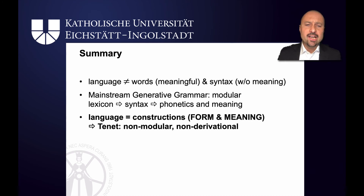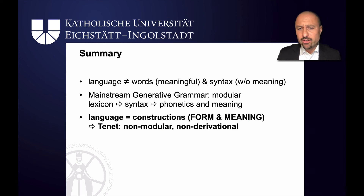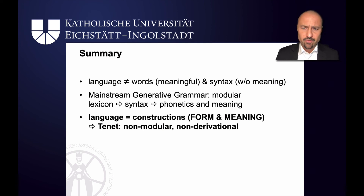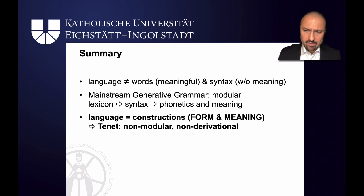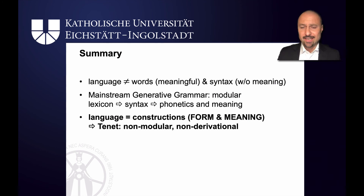Construction grammar is strictly non-modular: for construction grammar, form and meaning always go together. It's also a non-derivational approach, so you shouldn't assume movement operations of the type we've seen in the generative grammar examples. So far I've only shown you that the two are different, but the claims they make can obviously also be subjected to empirical evidence, and as we will see in this course, a lot of the language acquisition data now points to a construction grammar point of view, and not to a generative grammar one.